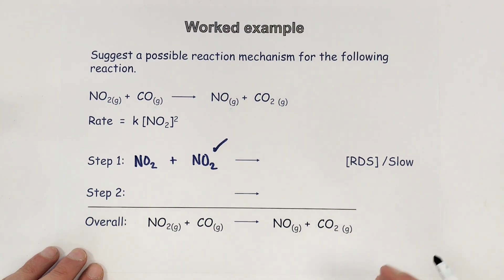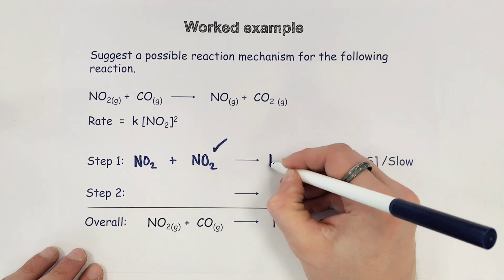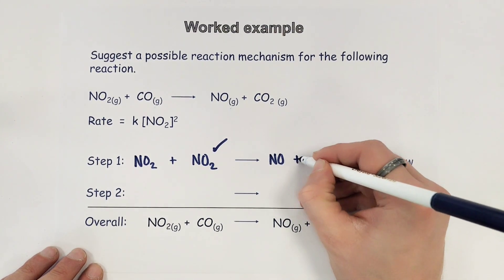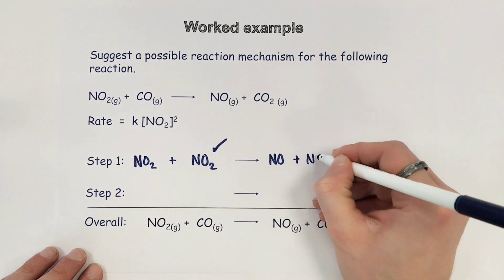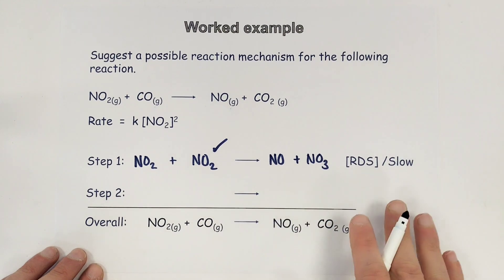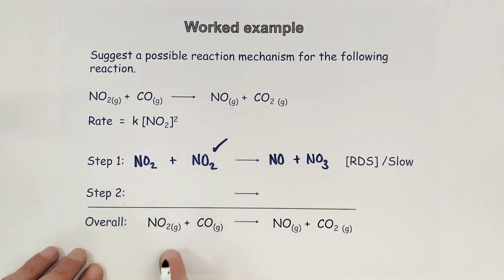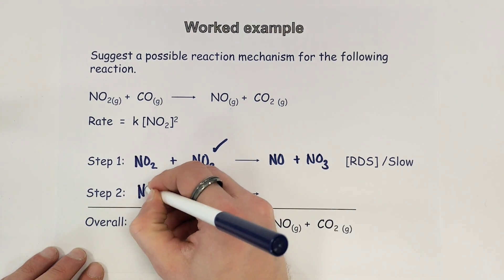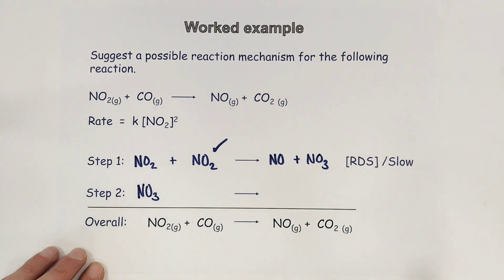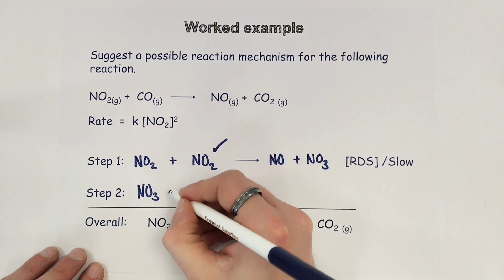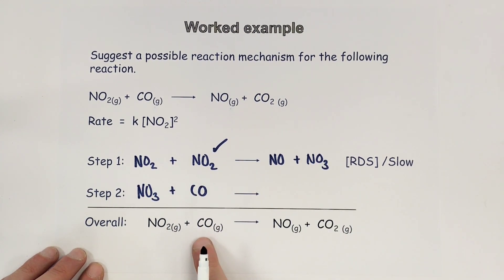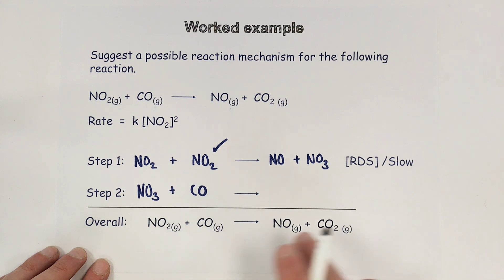Now I'm going to choose some products to form. I'm going to form NO because I need that at the end. I'm also going to form an NO3 molecule which I want to discard in my second step, as I don't want it to appear in the overall equation. So I'm going to start my second step with that NO3 molecule so it is used up, and I'm also going to use some carbon monoxide to react with it, because I need that as a reactant in the overall equation as well.